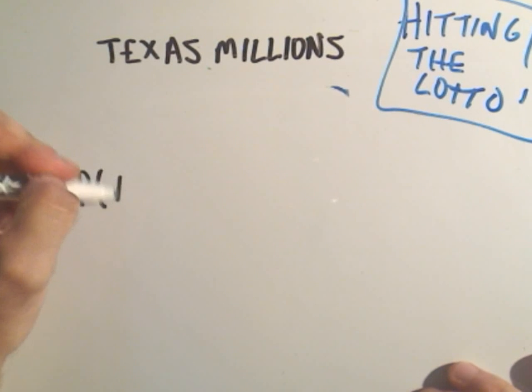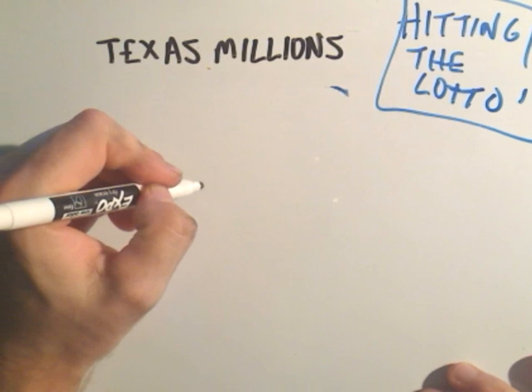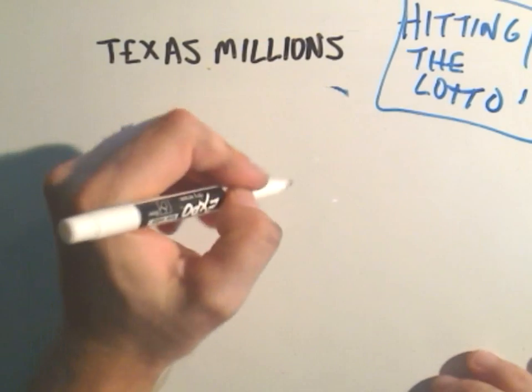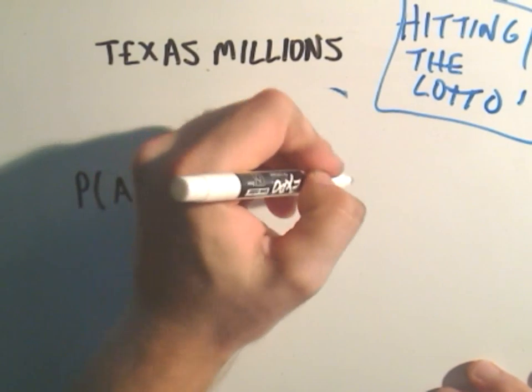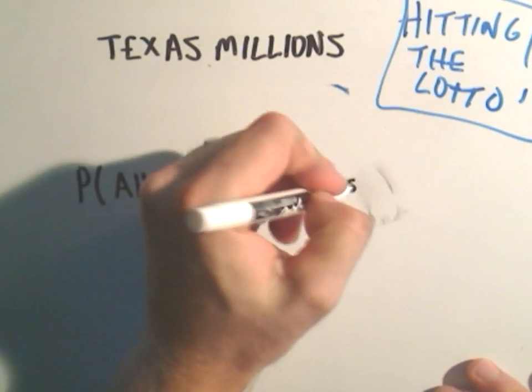So, what are we really calculating? We're calculating that we pick all five of the original balls that come out. And we pick the one correct, the one special ball.